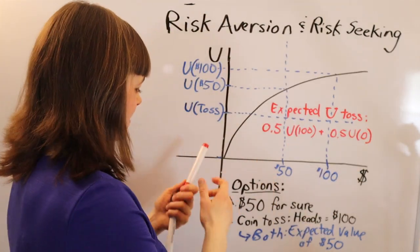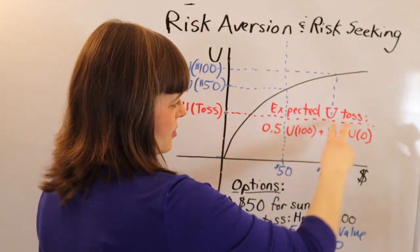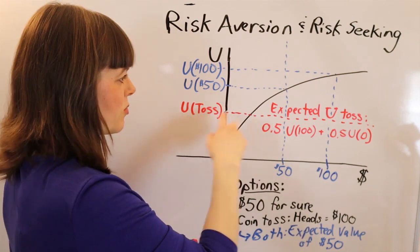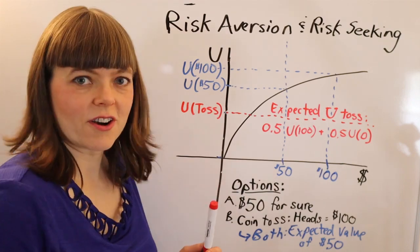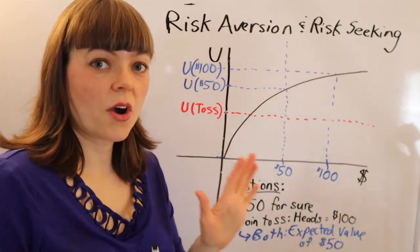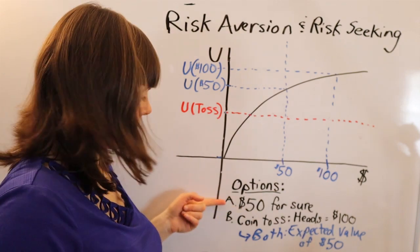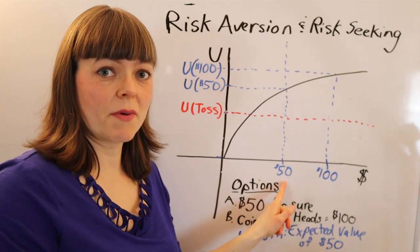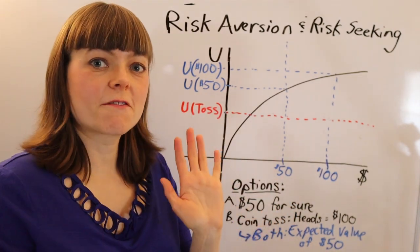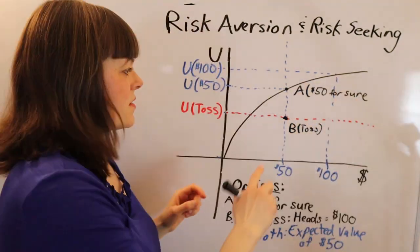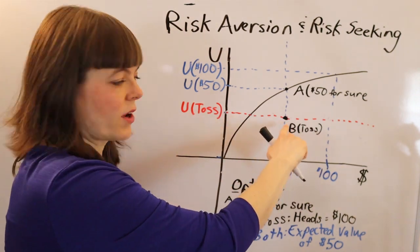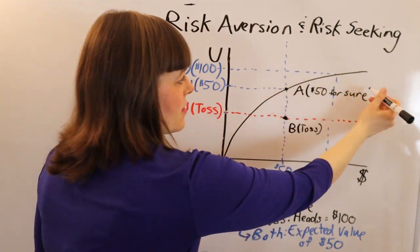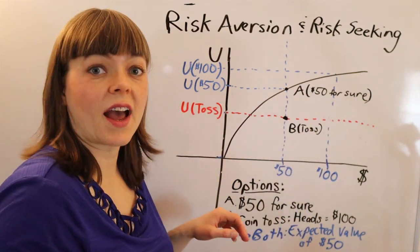So I've mapped the expected utility of the coin toss — a 50% chance we end up at the utility of $100 and a 50% chance we end up at the utility of $0 — exactly halfway between those two, which is the expected utility of the coin toss, projected over. Comparing options A and B — getting $50 for sure versus the coin toss — we map both the expected value of money and the expected utility in this space. We can see that option A, the sure $50, definitely has a higher utility than option B, the coin toss.